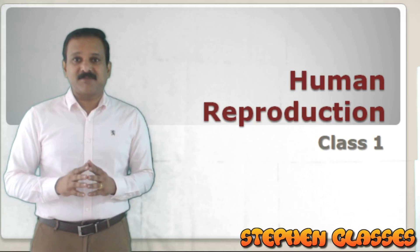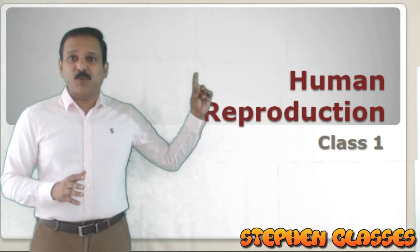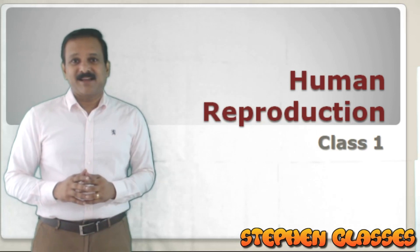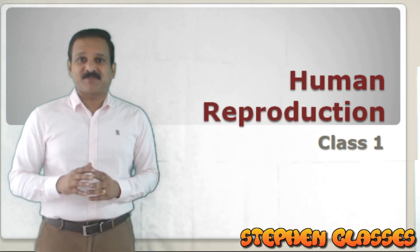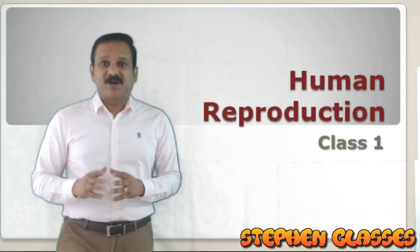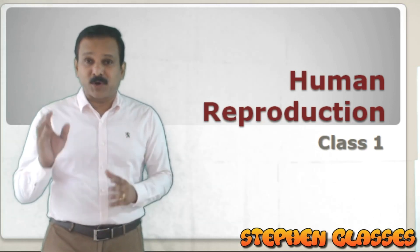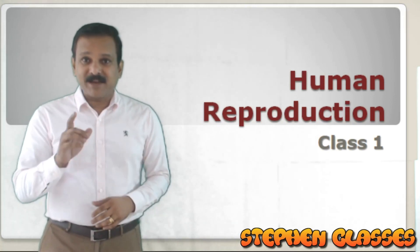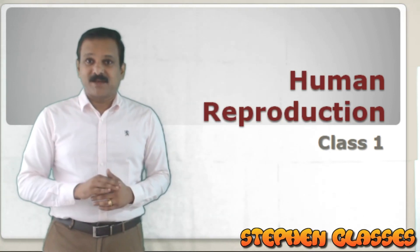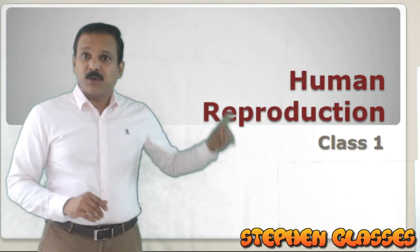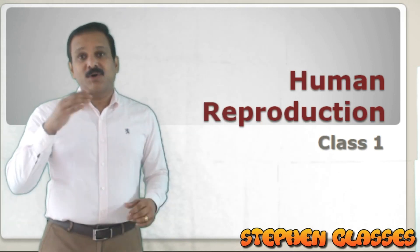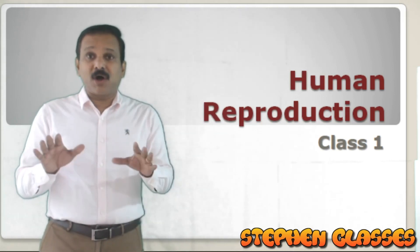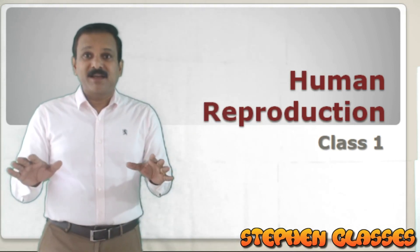We will begin with the first chapter itself. Our first chapter is Human Reproduction. First of all, what is reproduction? Reproduction is producing progeny which is similar in characters to their parents. In this chapter we discuss mainly human reproduction.